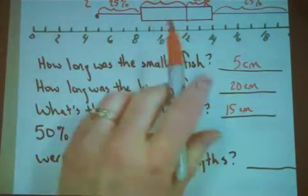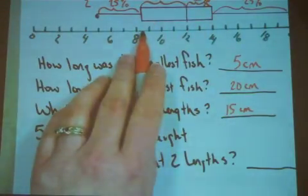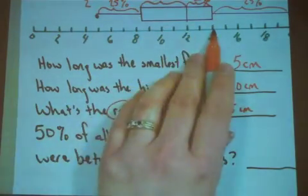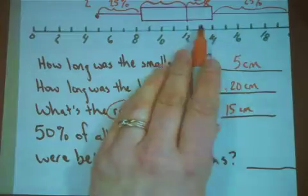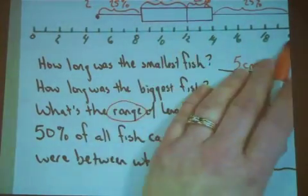The middle 50% were between, that's what, 8 and a half we said? So between 8 and a half and 14 centimeters. And then the top 50% caught were between 12 and 20 centimeters.